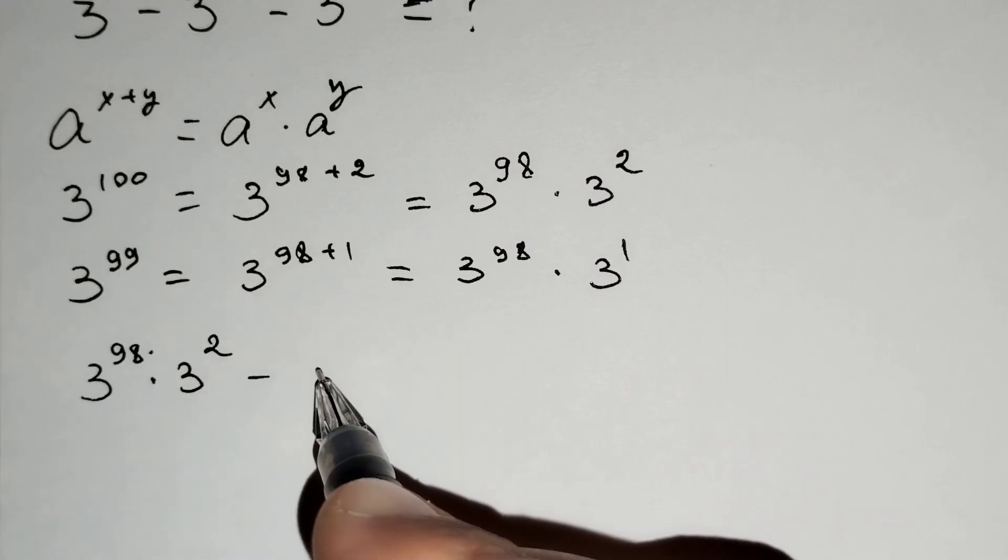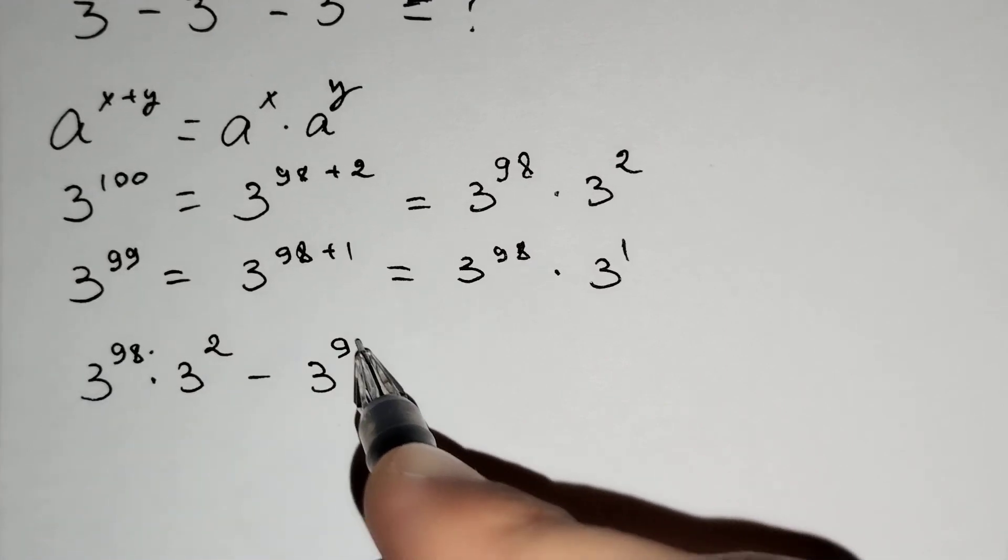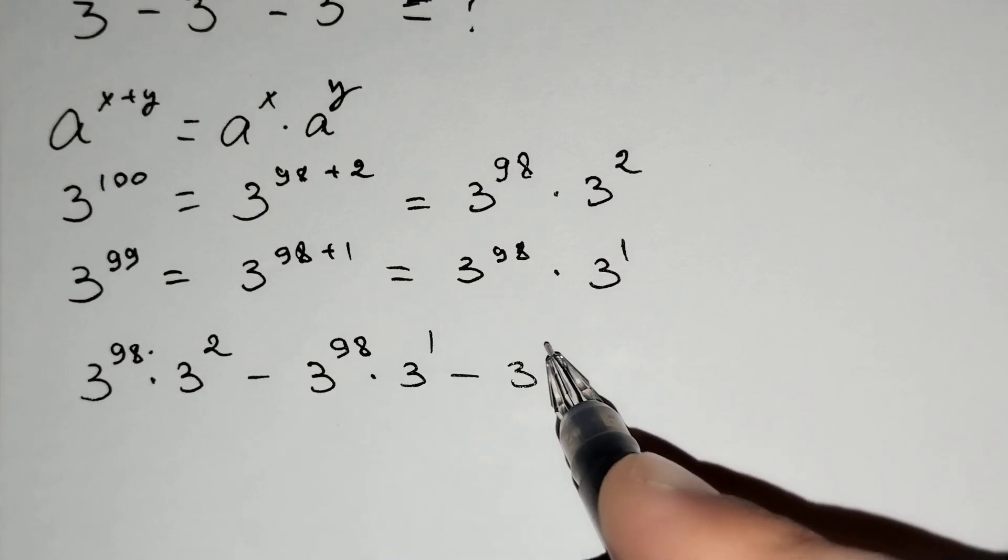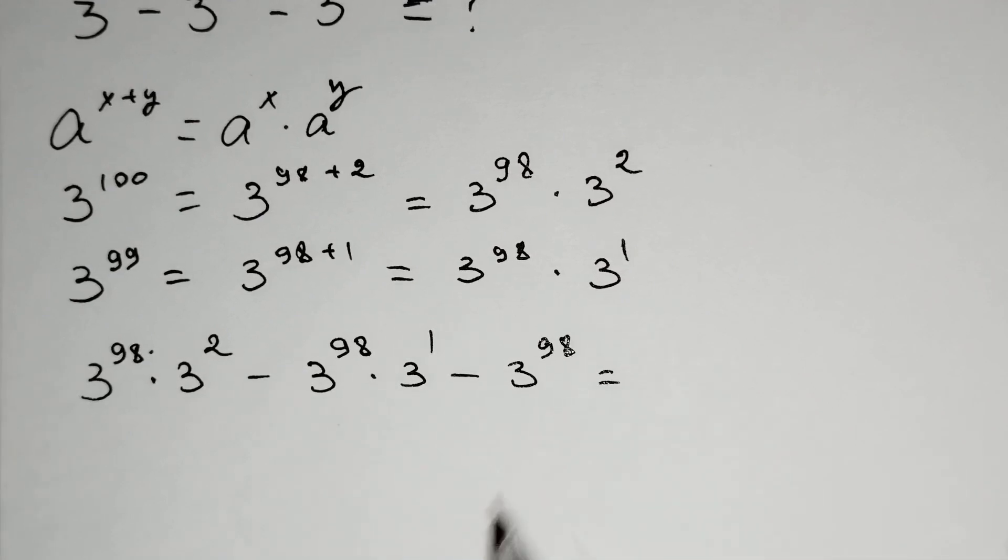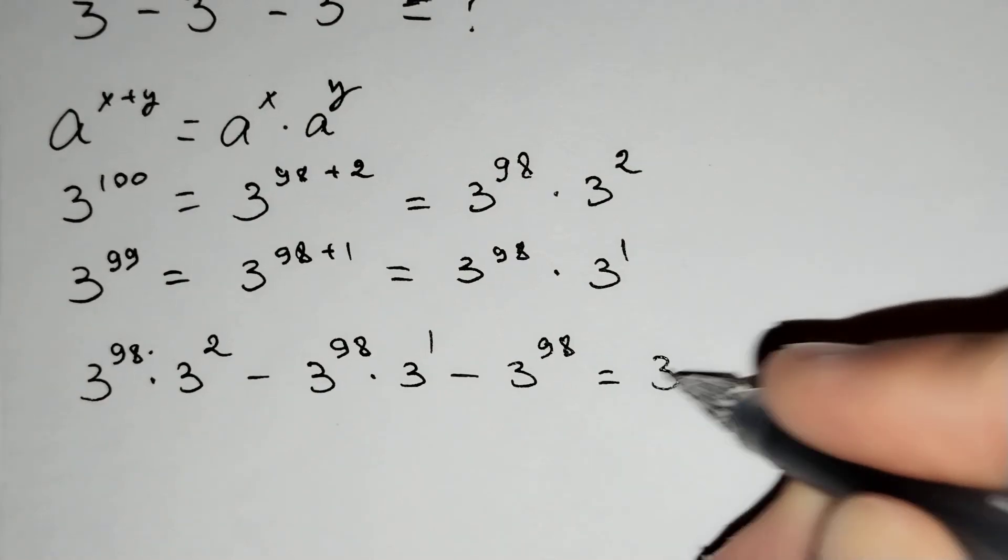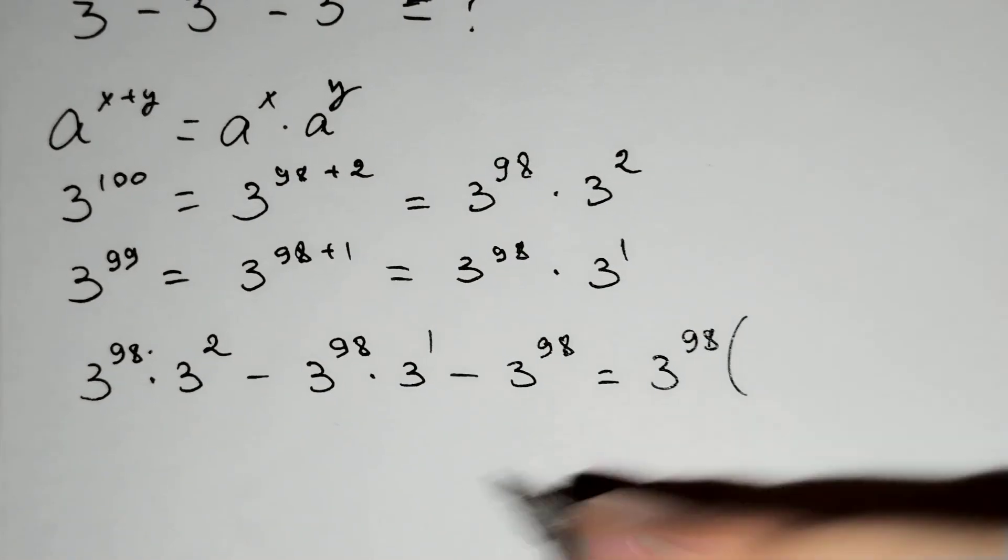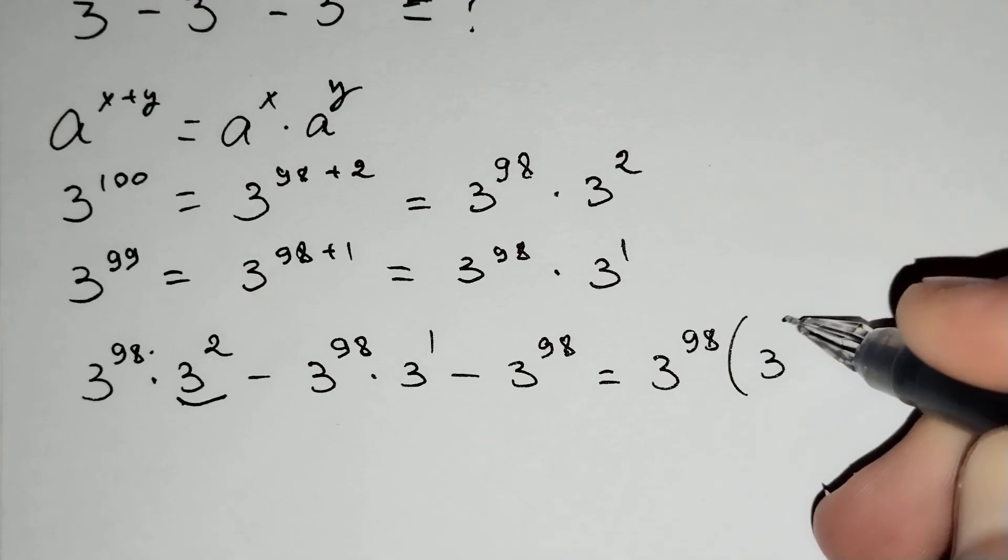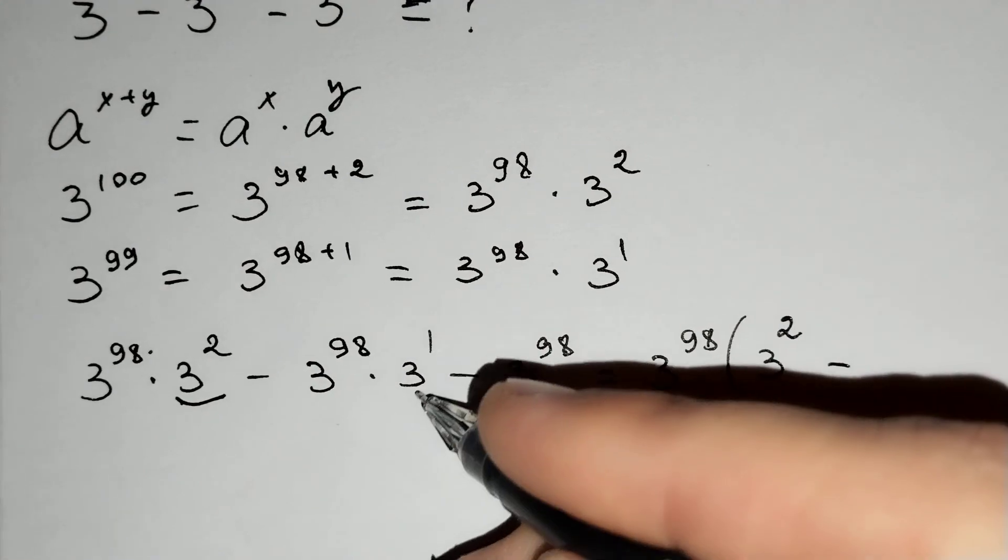This equals 3^98 * (3^2 - 3^1 - 1) after taking 3^98 out of the brackets. 3^2 remains here, minus 3^1, minus 1 remains here.